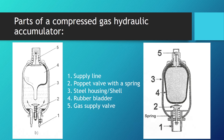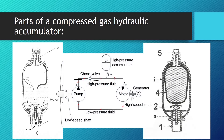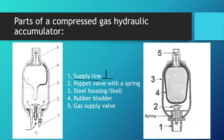Let's cover the basic parts of a compressed gas hydraulic accumulator. On number one, we have the supply line — the line through which hydraulic oil comes into the accumulator. This is the only connection point to the hydraulic circuit. On number two, we have a poppet valve with a spring. On number three, we have the steel housing, sometimes called the shell. On number four, we have the rubber bladder in which the compressed gas is stored. And on number five, we have the gas supply valve through which we charge the rubber bladder, which is filled with nitrogen most of the time.